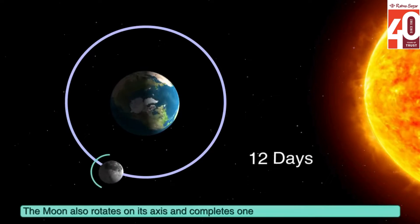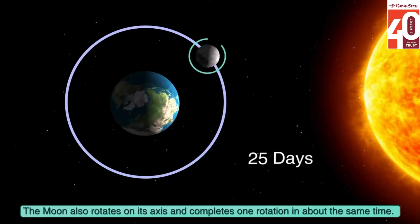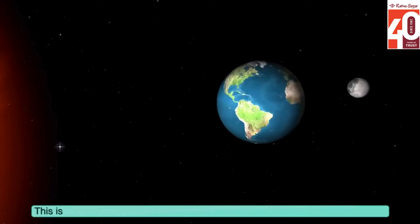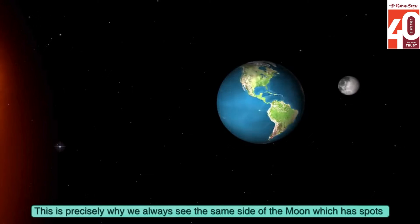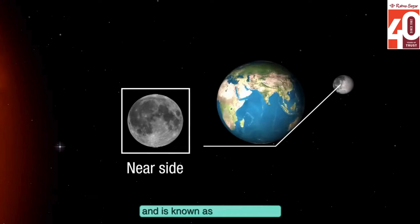This is precisely why we always see the same side of the moon, which has spots and is known as the near side.